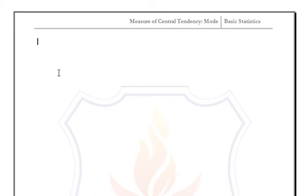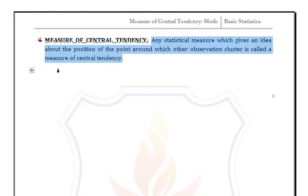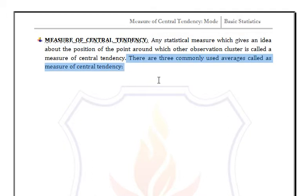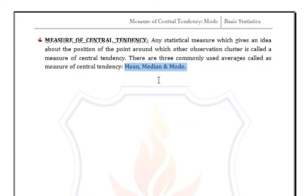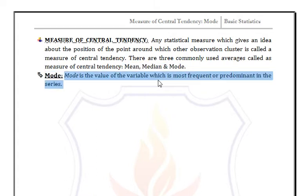In this video we discuss measures of central tendency. Any statistical measure which gives an idea about the position of the point around which other observations cluster is called a measure of central tendency. For any data, the most representative value is known as the central tendency. There are three commonly used averages: mean, median, and mode. We are going to discuss mode now.